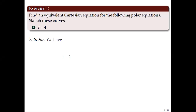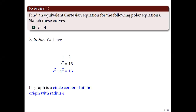First, we square both sides giving us r squared equal to 16, and using our conversion equation for r, we get x squared plus y squared equal to 16. Hence, its graph is a circle centered at the origin with radius 4, as shown on the right.